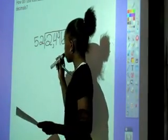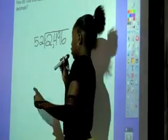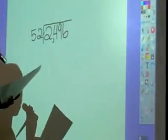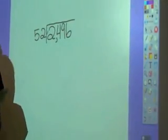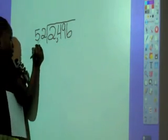Now for our problem. This is 2,496 divided by 52. So first you always start out with estimating the most compatible numbers.